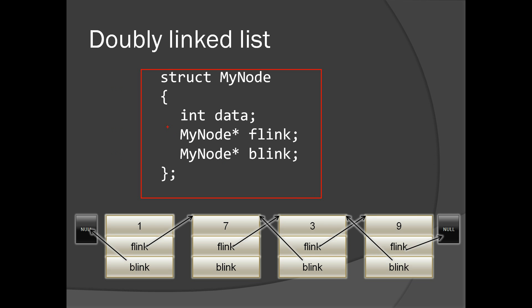This is how a doubly linked list generally looks: you have the data, one link which is the forward link, and another link which is the backward link. For example: one, seven, three, nine — the F link is pointing forward through seven, three, and nine, then null at the end. The B link points backwards, and you have a null at the start to show the end of both the F link and B link.